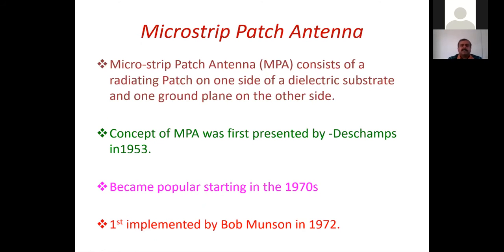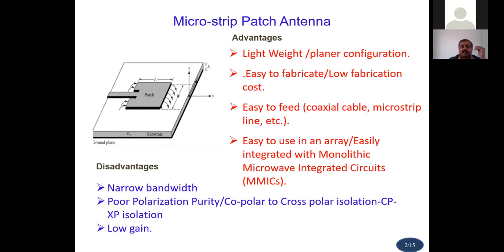Microstrip patch antennas have gained great popularity because of established theory and suitability for batch production—especially rectangular and circular geometries. This planar antenna was introduced by Deschamps in 1953 and gradually developed from 1970 onwards. Its advantages include lightweight, planar configuration, easy fabrication, low cost, easy coaxial cable feeding, and easy array formation. Its disadvantages include narrow bandwidth, poor polarization purity, and low gain, which researchers are continuously working to improve.